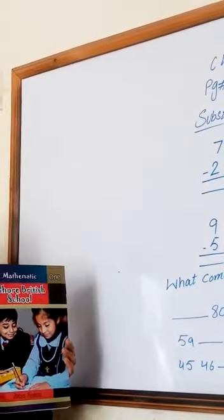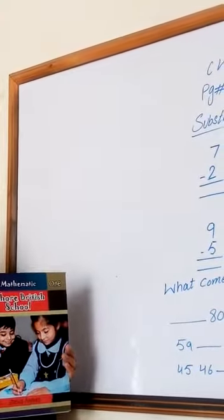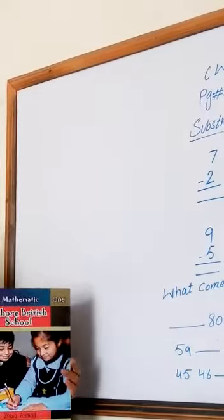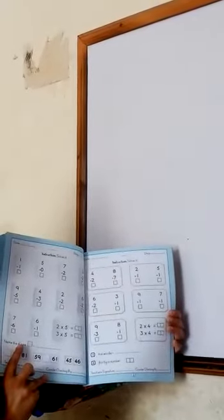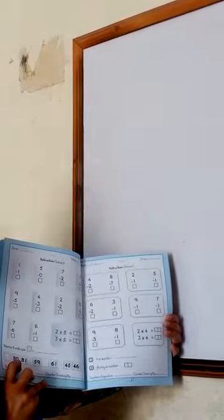Bismillahirrahmanirrahim. Assalamualaikum warahmatullahi wabarakatuh. Take out your math book part 1, open page number 26. Okay kids, we will do page 26. Name the shape and words that come after, between, and before. Now let's start.